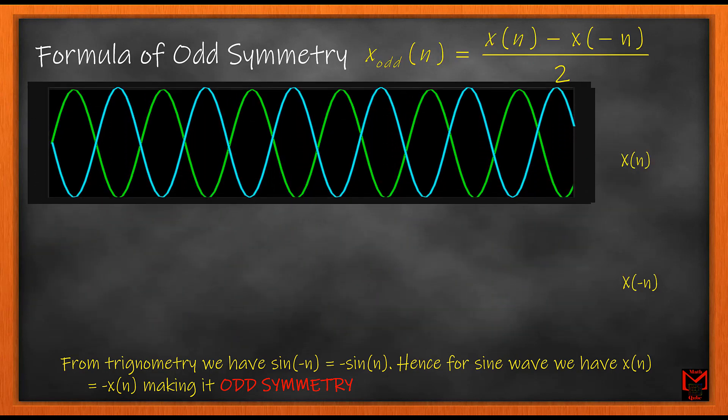The formula for the odd symmetry is given by the signal minus the negative of the signal along the n-axis, divided by 2.